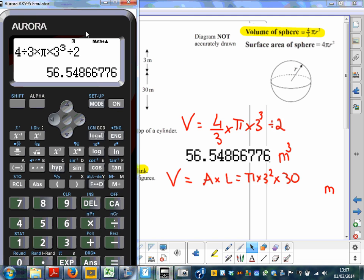When I do that on my calculator, π times 3 squared times 30, then I add this number plus the 56.54866776.